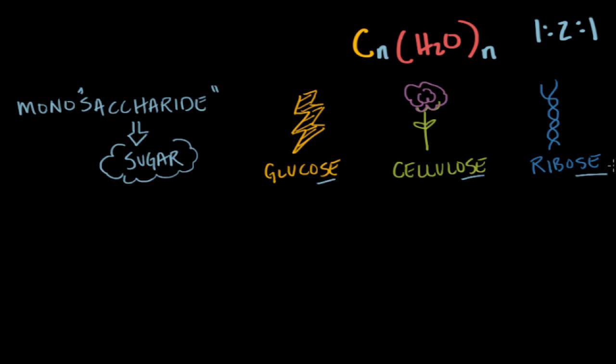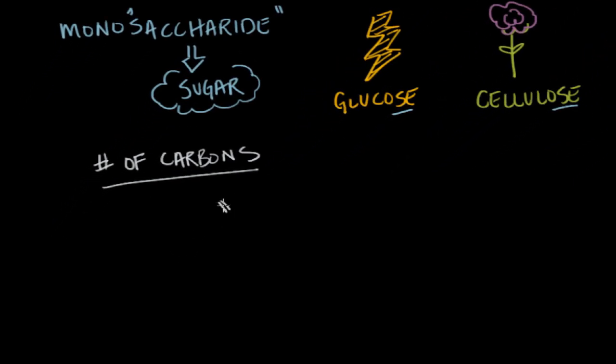And there are actually two prefixes that help us further break down the naming of these compounds. The first prefix that we're going to consider is how many carbons are in the chain. So the number of carbons that are in the chain for this molecule. So for example, I'm going to draw glyceraldehyde, which is generally considered to be the simplest carbohydrate.